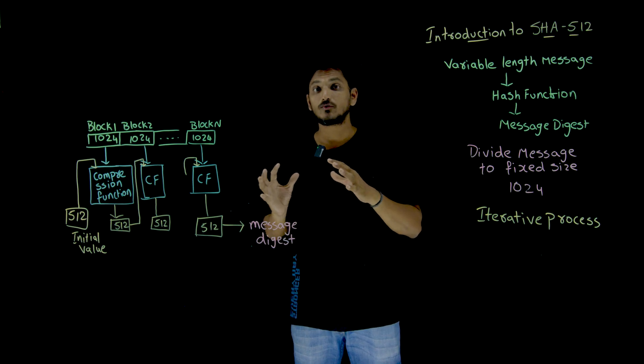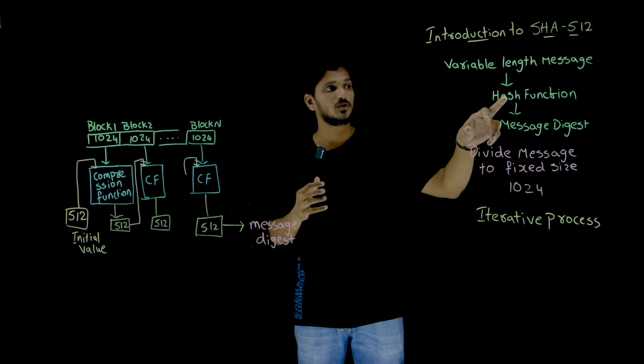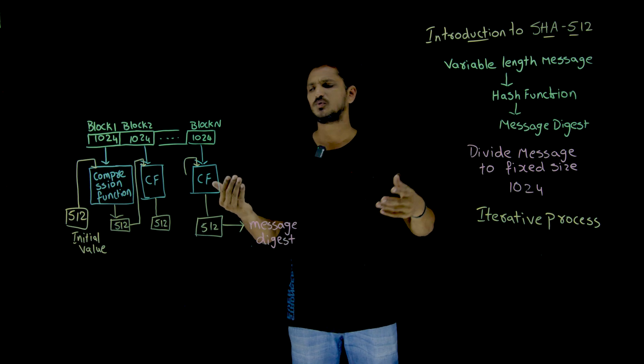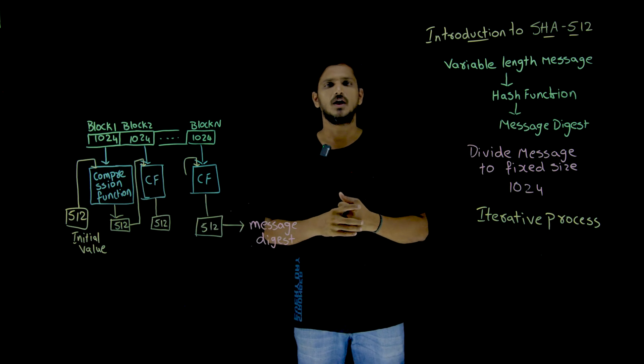So this is how the overview of cryptography hash function, we sometimes call it as compression function, looks like.